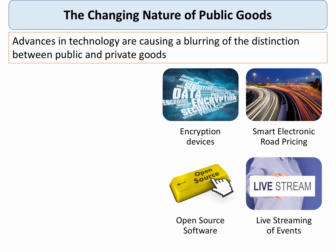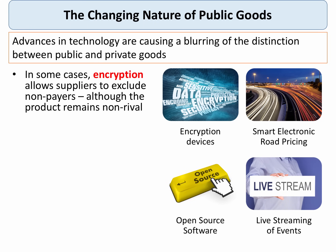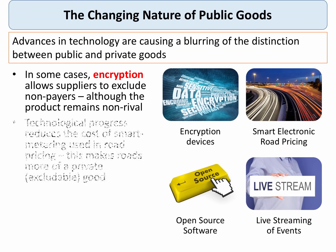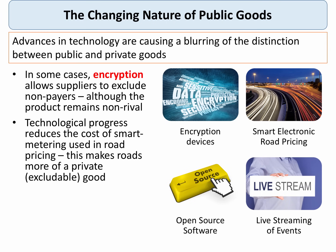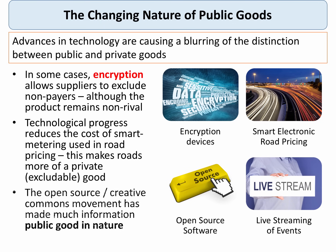New technology is changing the nature of public and private goods. Encryption devices allow suppliers to exclude non-payers even if a product is non-rival — for example, pay-per-view. Technological progress is also reducing the cost of smart metering, so we'll see more pay-as-you-go road systems and toll booths, meaning the cost of excluding non-payers is coming down. You may also be familiar with the open-source creative commons movement — products such as Flickr and open commons licences are making information on the web extremely open and public good in nature.